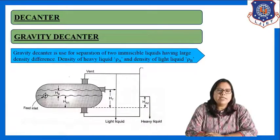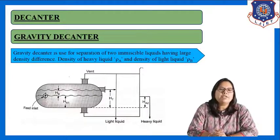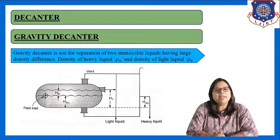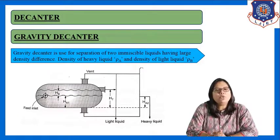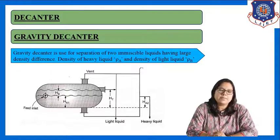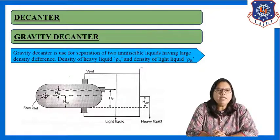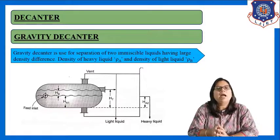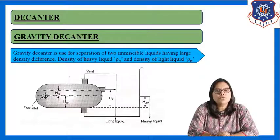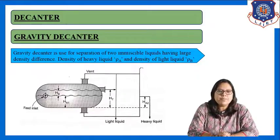We have to understand what is the meaning of decantation. Basically, decantation is a separation process of two immiscible liquids having density difference. Decantation is used to separate two immiscible liquids having density difference, and the equipment which is used for this decantation purpose is known as a decanter.